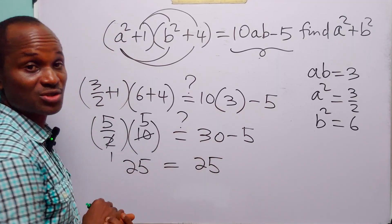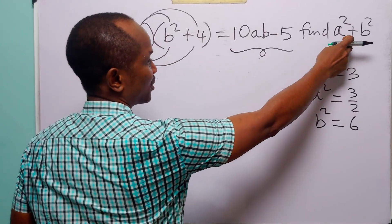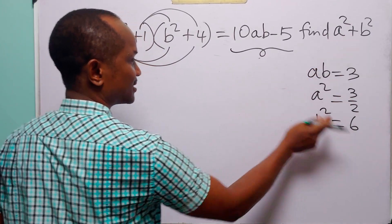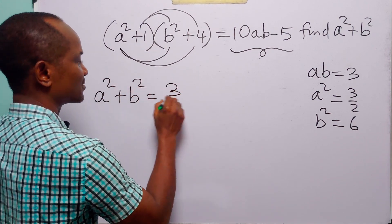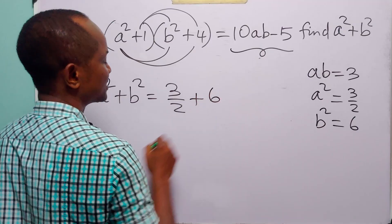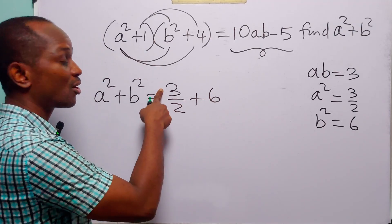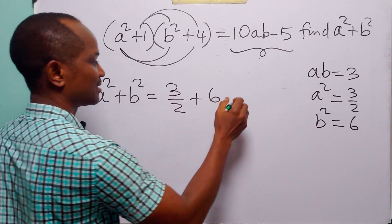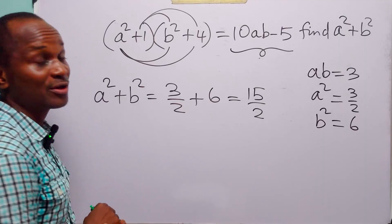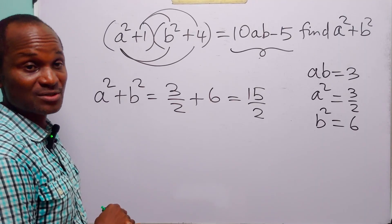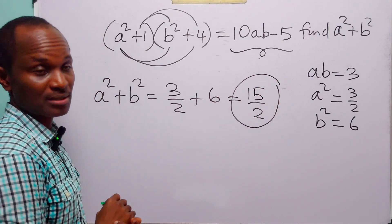To find a squared plus b squared, we simply add the two values: a squared plus b squared equals 3 over 2 plus 6. That is 3 over 2 plus 12 over 2, which equals 15 over 2. So the value of a squared plus b squared, when this equation holds, is 15 over 2.